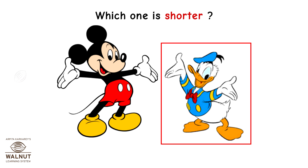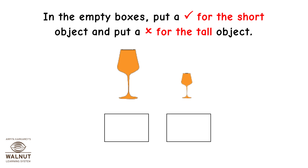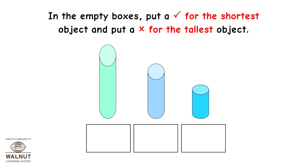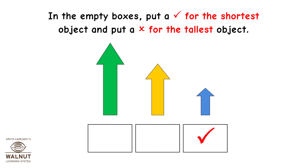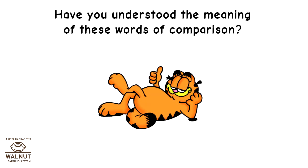In the empty boxes, put a tick mark for the short object and put a cross mark for the tall object. In the empty boxes, put a tick mark for the shortest object and put a cross mark for the tallest object. Have you understood the meaning of these words of comparison? Yes, that's great!